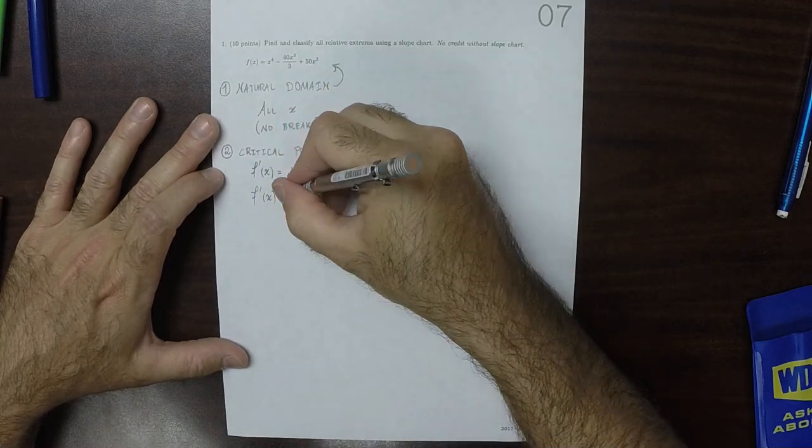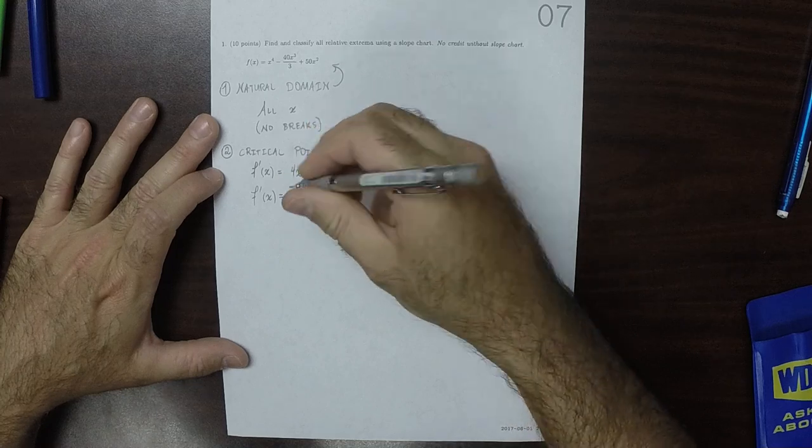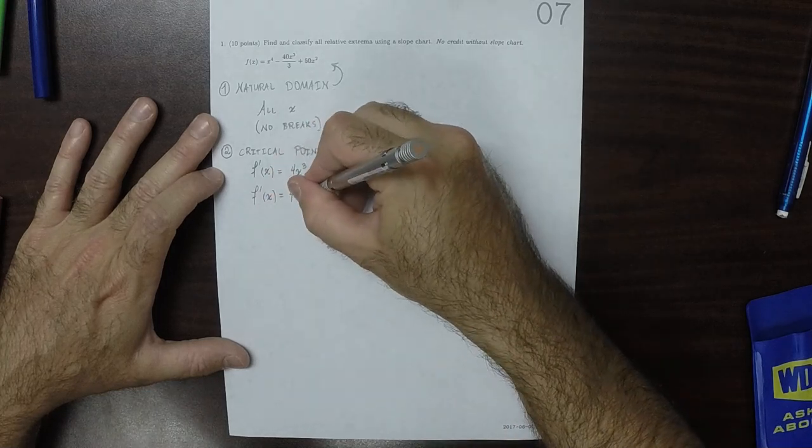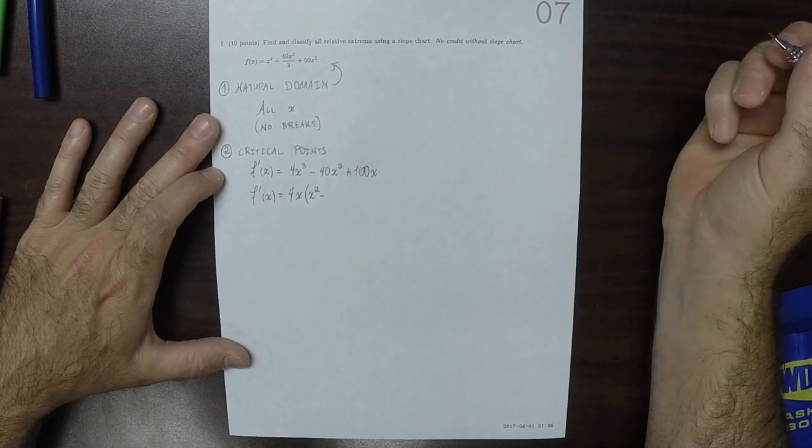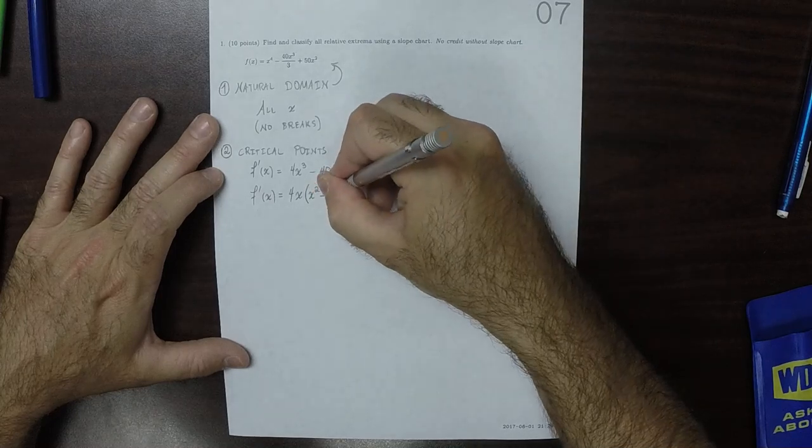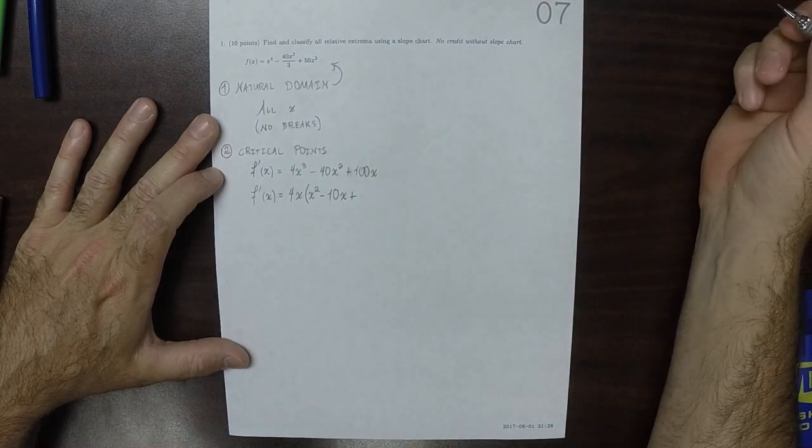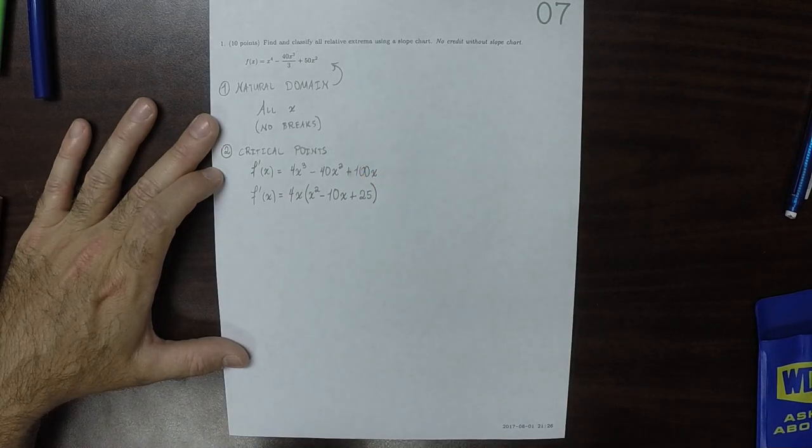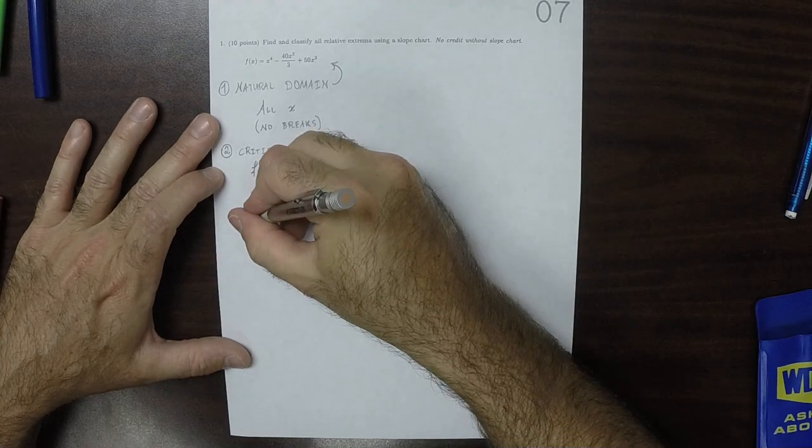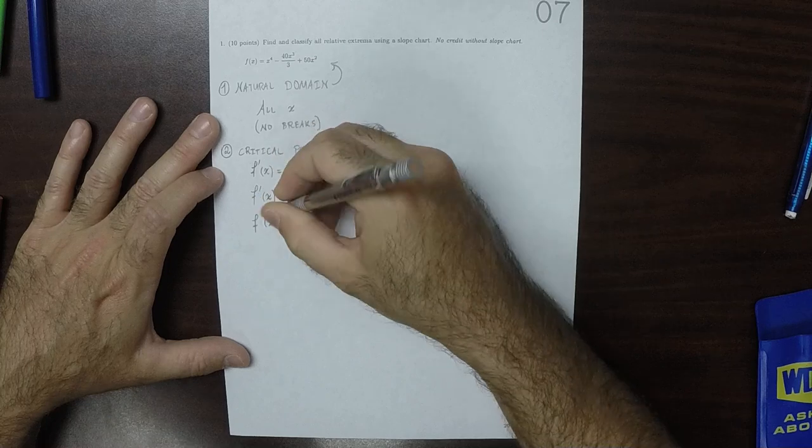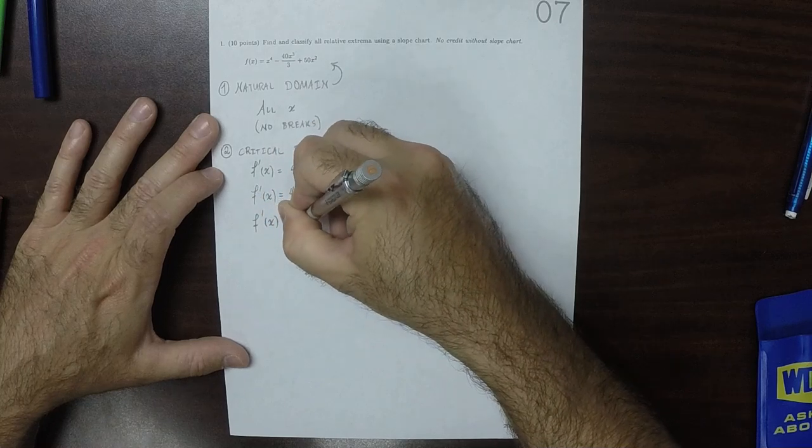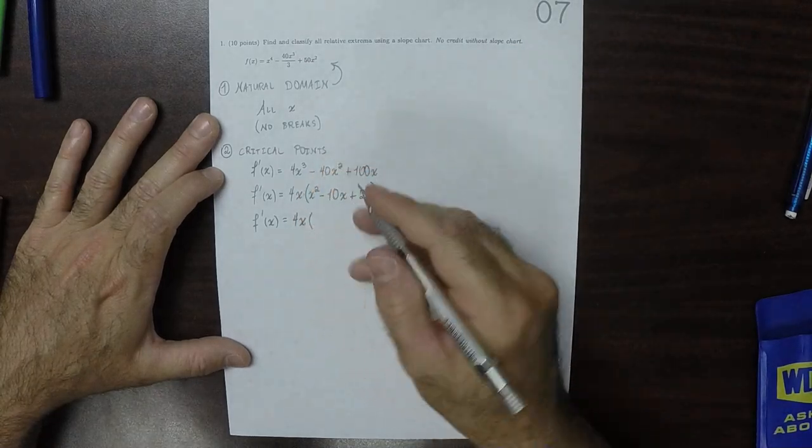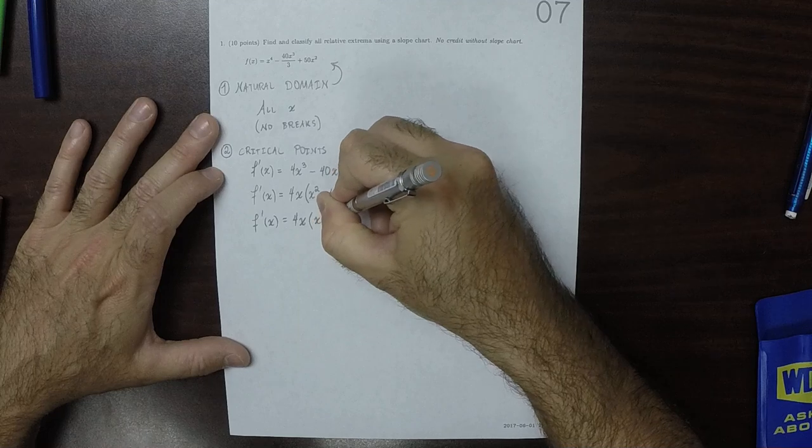I can see that 4x is common to all of those terms. If we factor 4x out of each one, the first one would be x², and then minus 10x, and then plus 25. And now that quadratic factors. So the derivative of f is 4x, and then multiplied by, well, that factors to (x minus 5)².